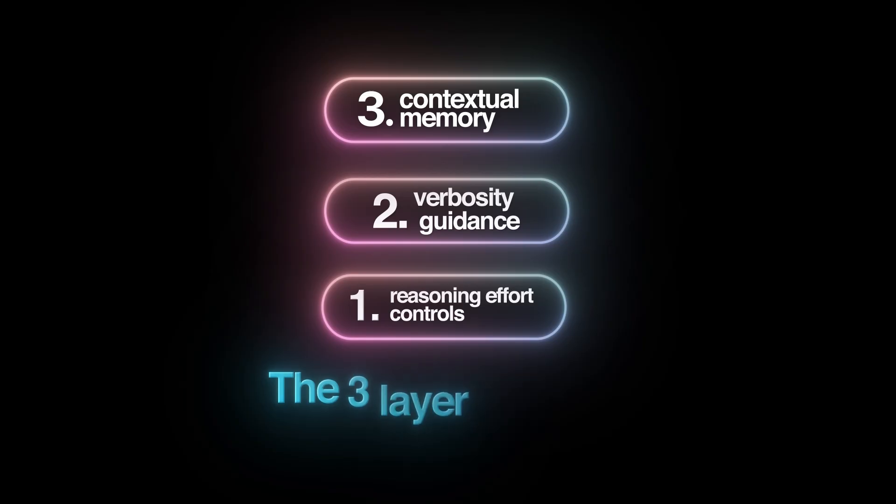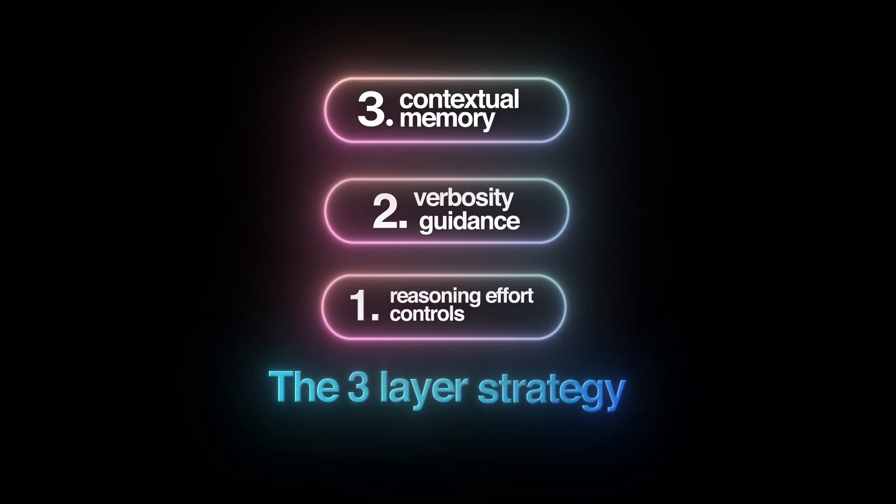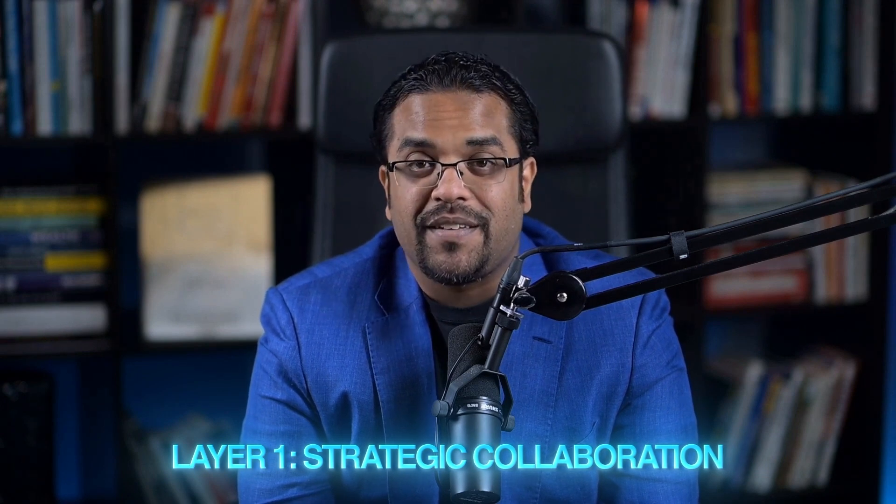The three-layer strategy — think of it like this. Layer one: strategic collaboration — define the problem properly. Layer two: tactical planning — turn insights into actionable plans. In layer one, GPT-5 is your thinking partner. You're not asking for deliverables yet. You're clarifying the problem.